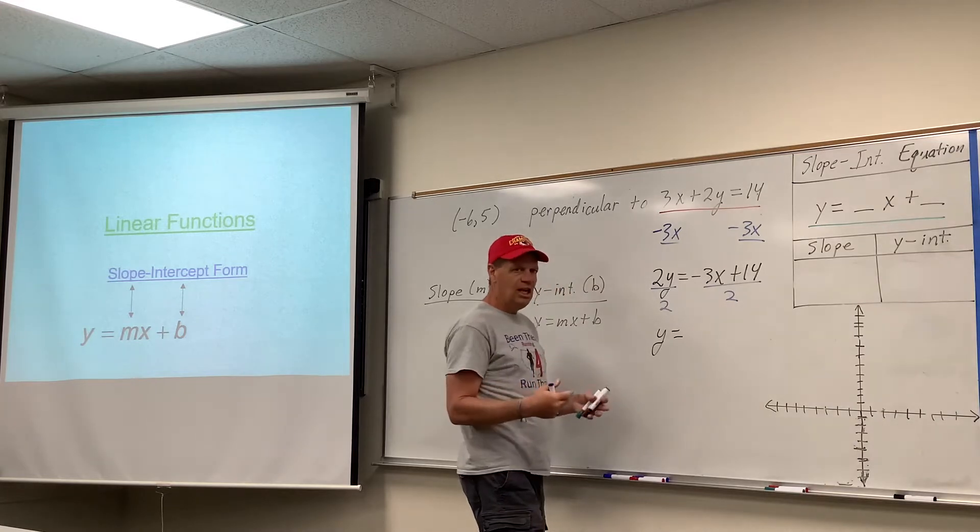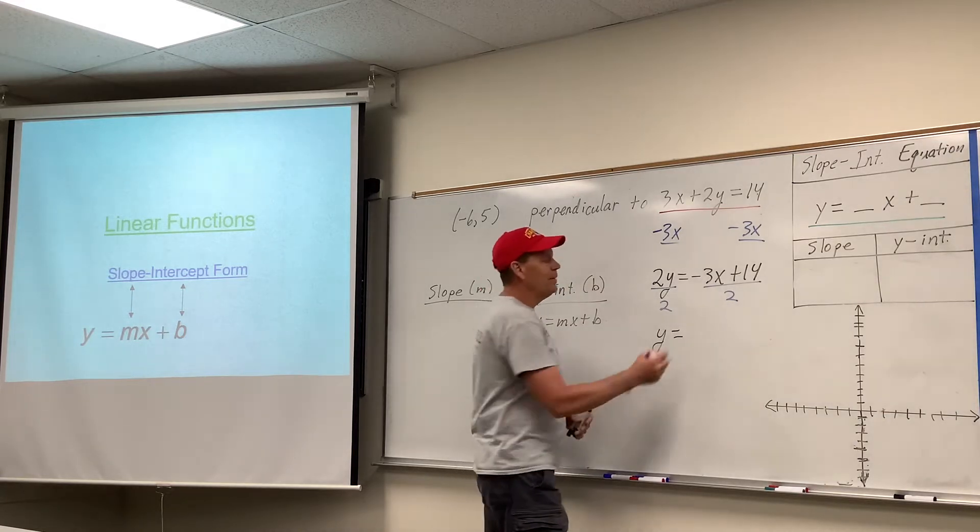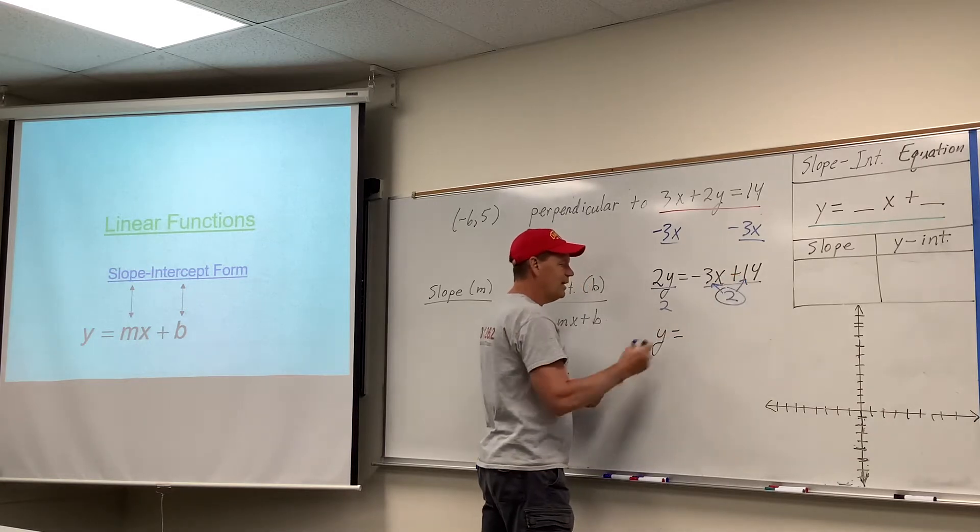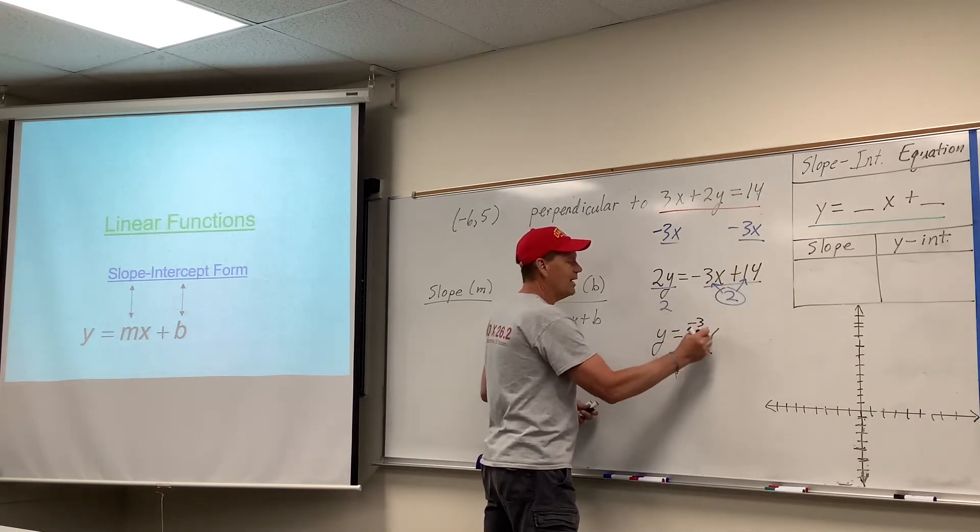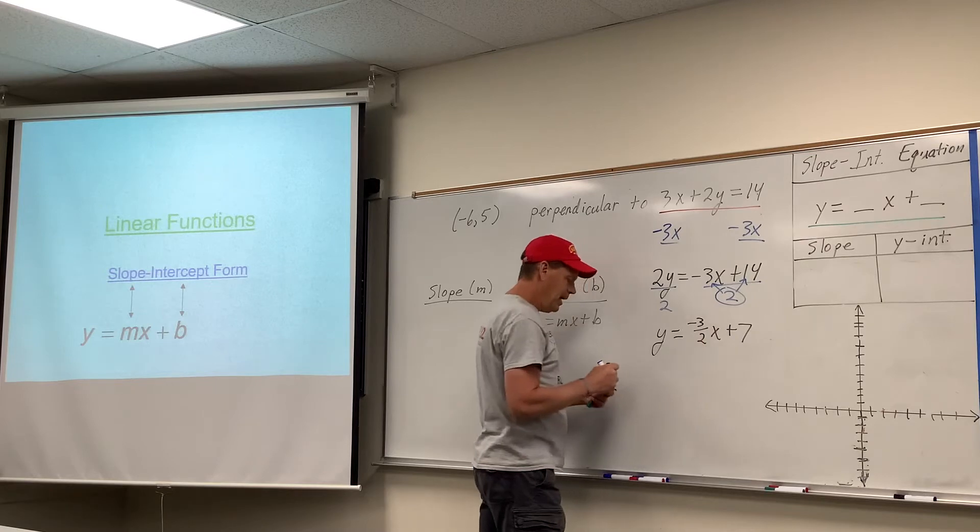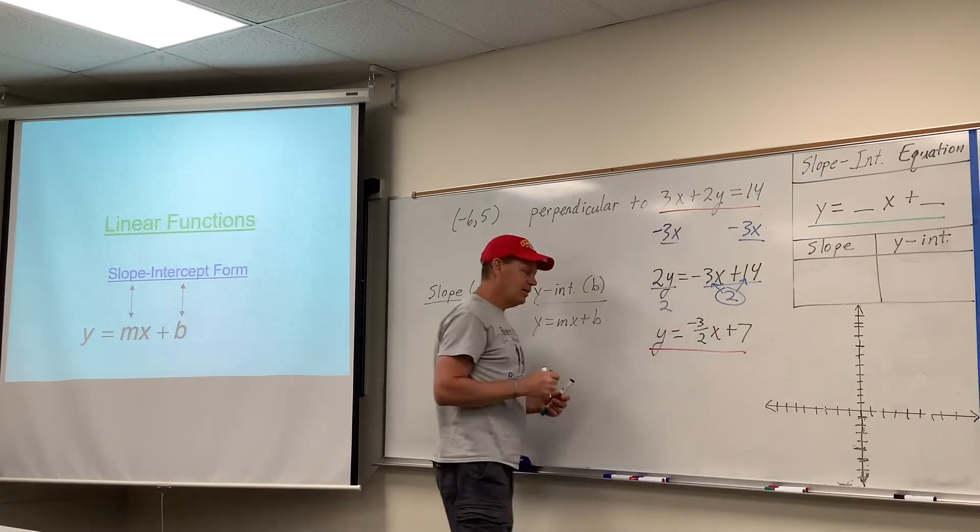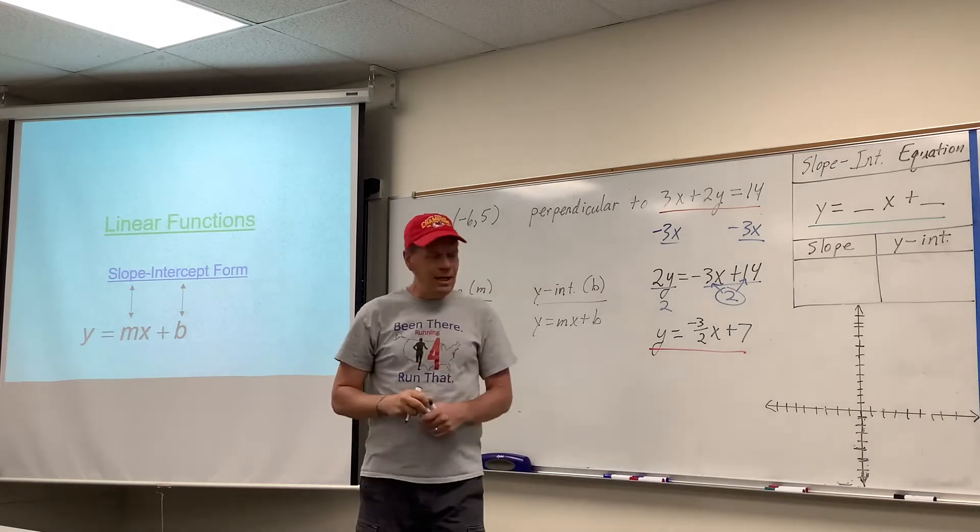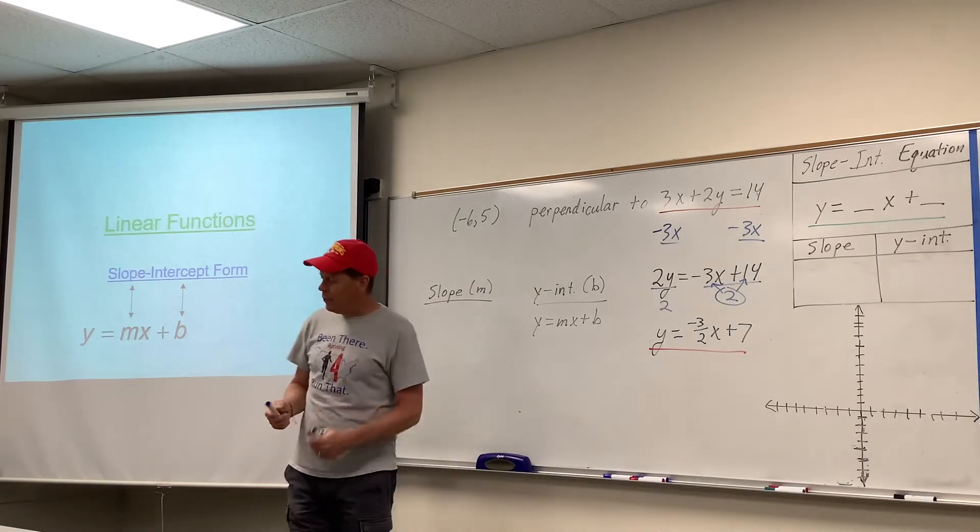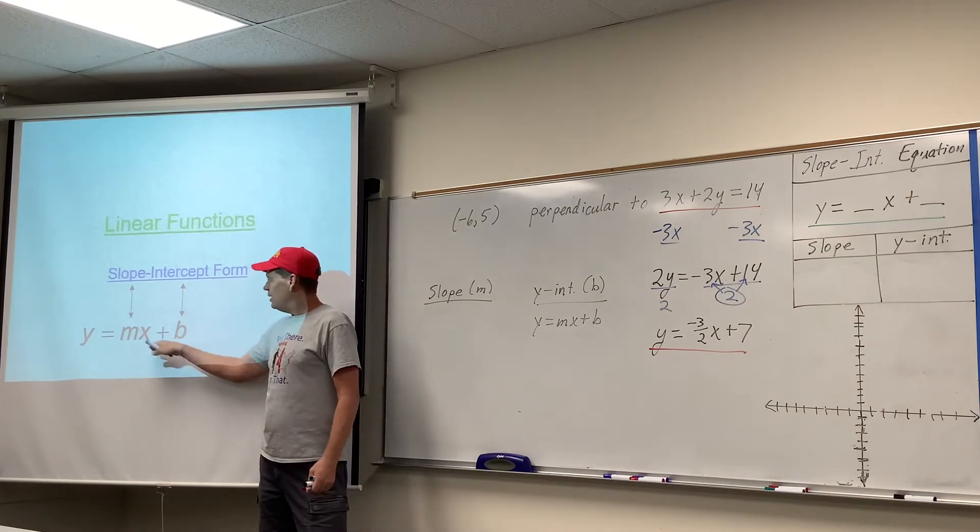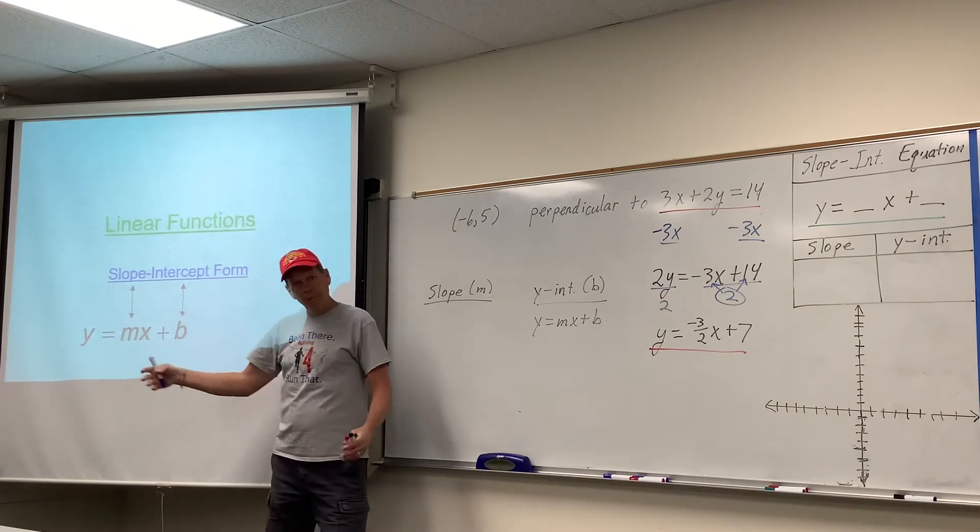And we got it in slope intercept form, which the fancy people would say, well no, the hillbillies would say get y by itself. And the fancy people would say slope intercept form. But anyway, if we divide both of these by two, we would get y = -3/2x + 7. And that's just a rearrangement of that red equation they gave us at the beginning.